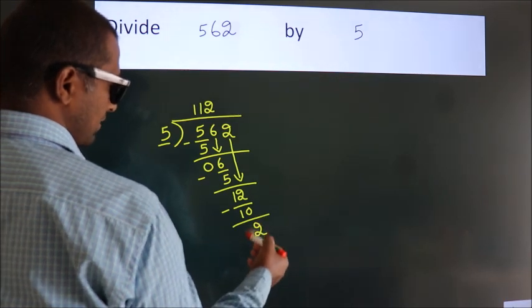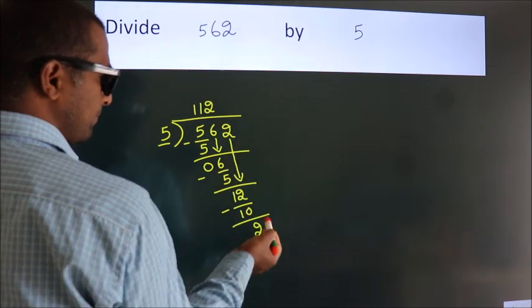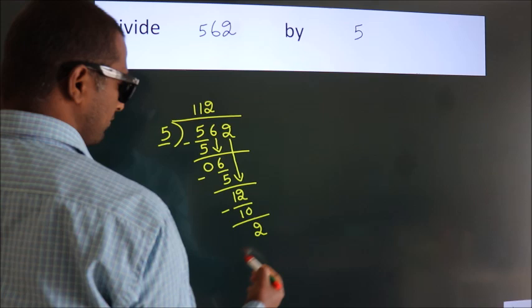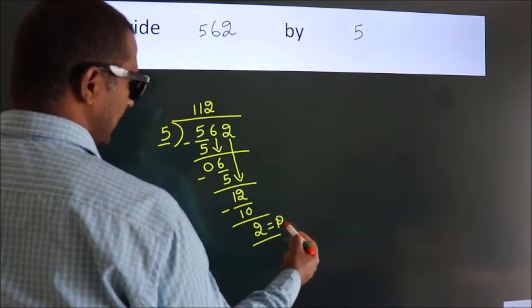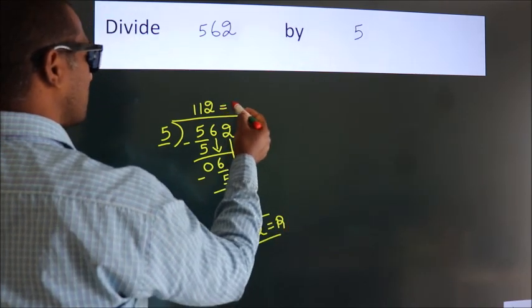After this, no more numbers to bring it down. So we stop here. This is our remainder. This is our quotient.